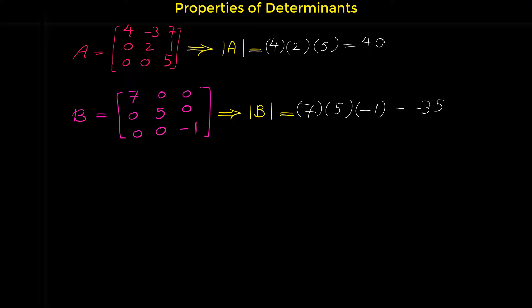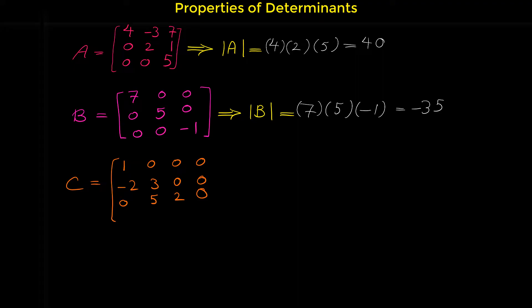Let me show you an example of a lower triangular matrix. Consider this 4 by 4 matrix: 1, 0, 0, 0 in the first row; -2, 3, 0, 0 in the second row; 0, 5, 2, 0 in the third row.